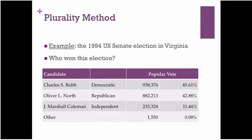Let's look at an example. This is an example from 1994. There was an election for the United States Senate for one of the seats in Virginia. And with the exception of a few scattered votes, almost everyone voted for one of three candidates. Those candidates were Charles Robb, the Democrat; Oliver North, the Republican; and Jay Marshall Coleman, the Independent. And you'll see each of those candidates received a substantial number of votes in the hundreds of thousands.